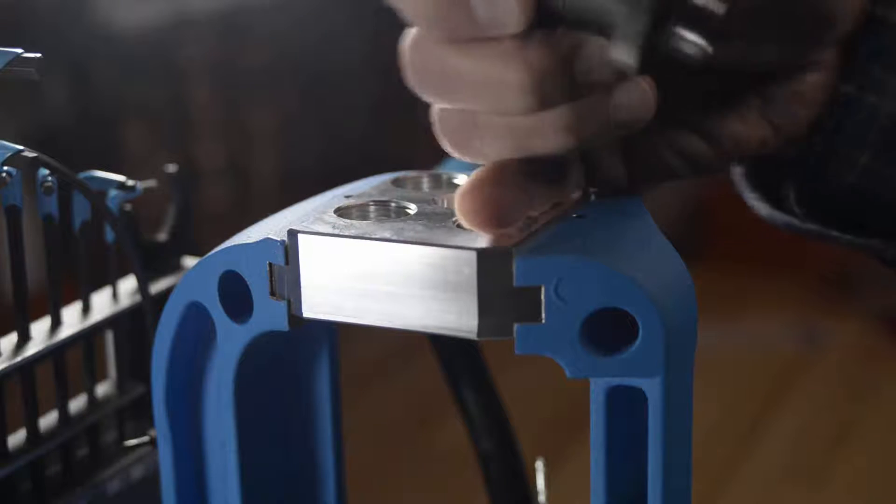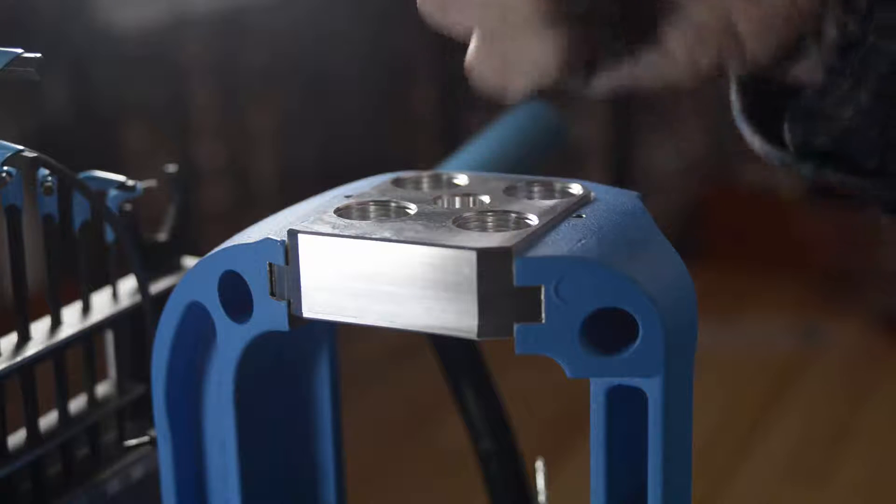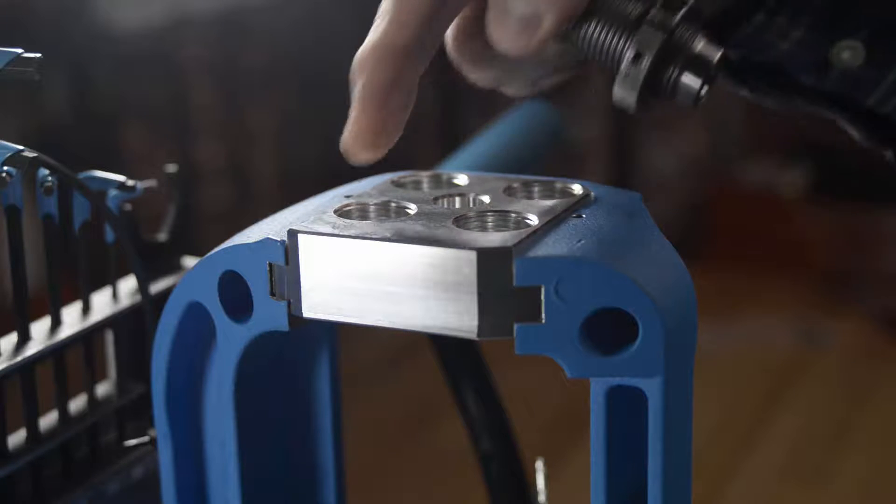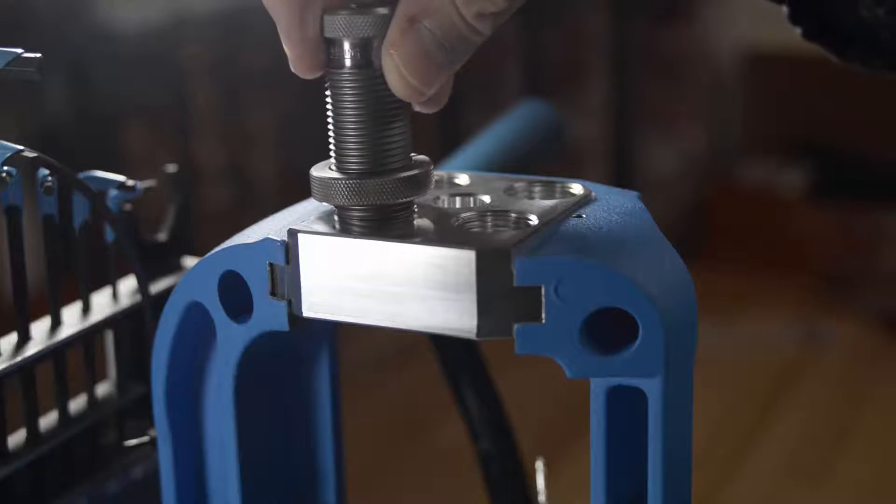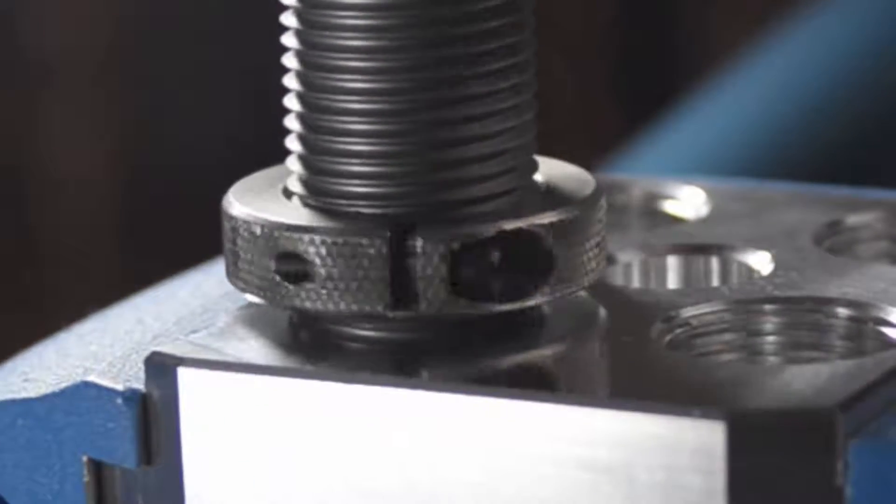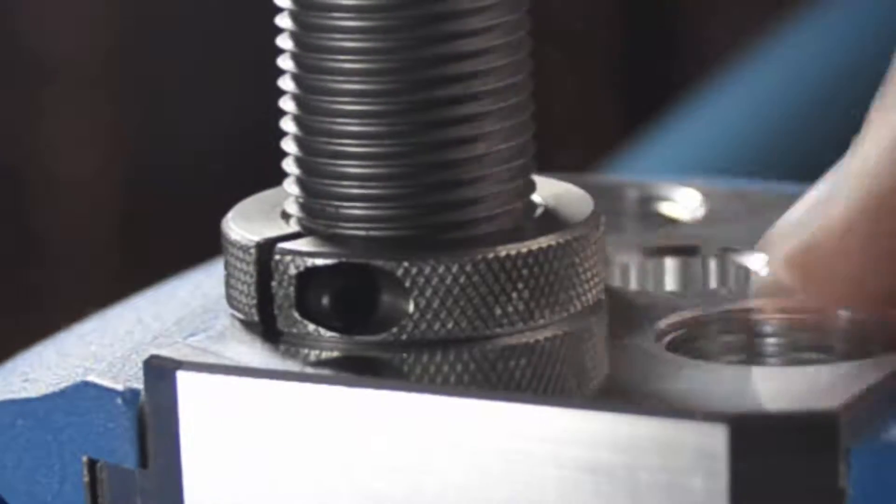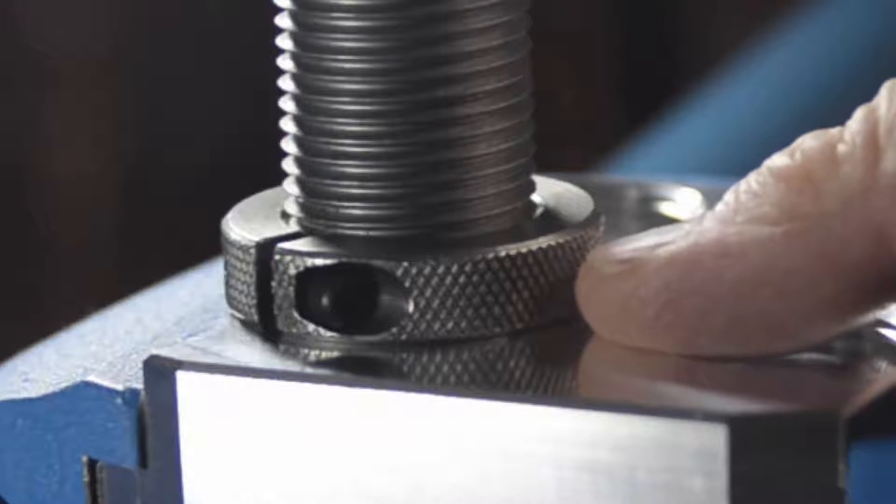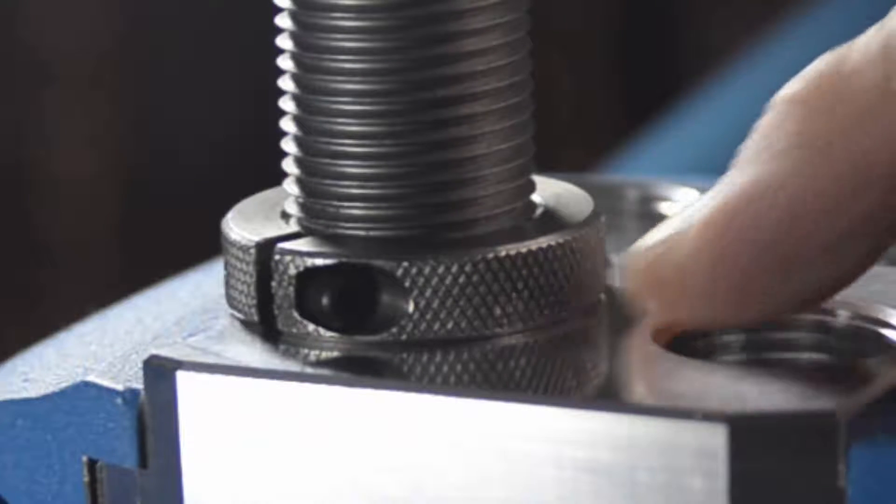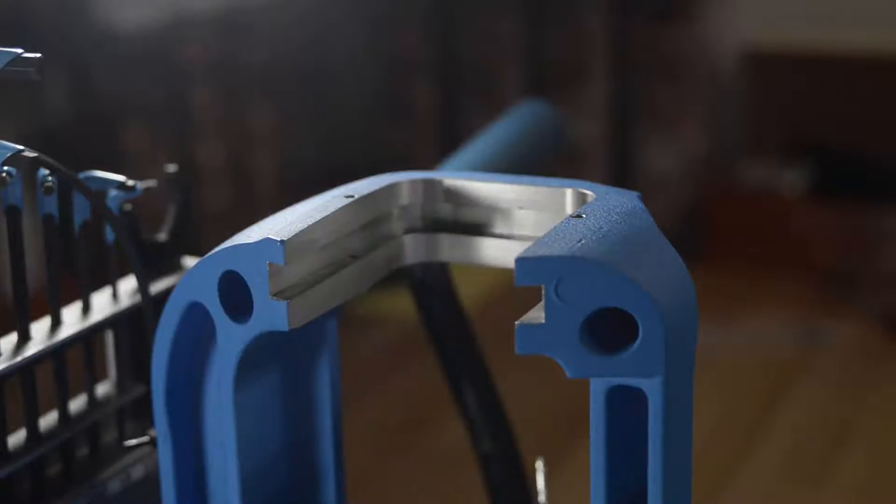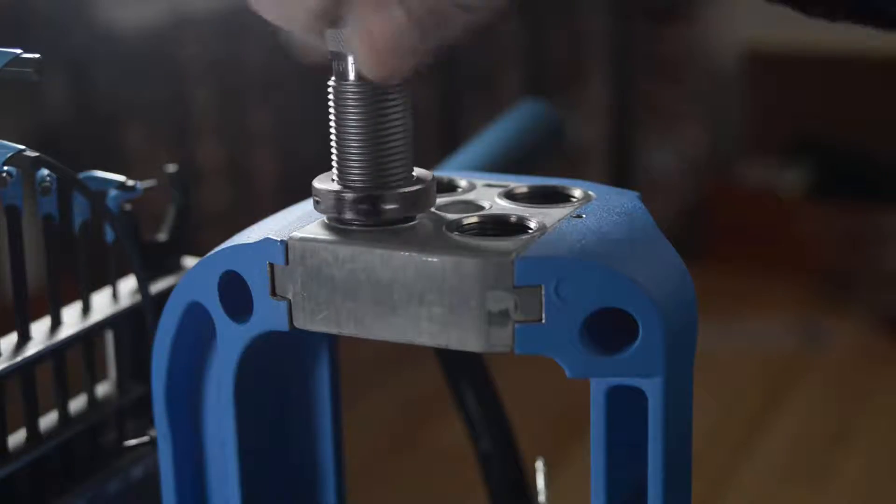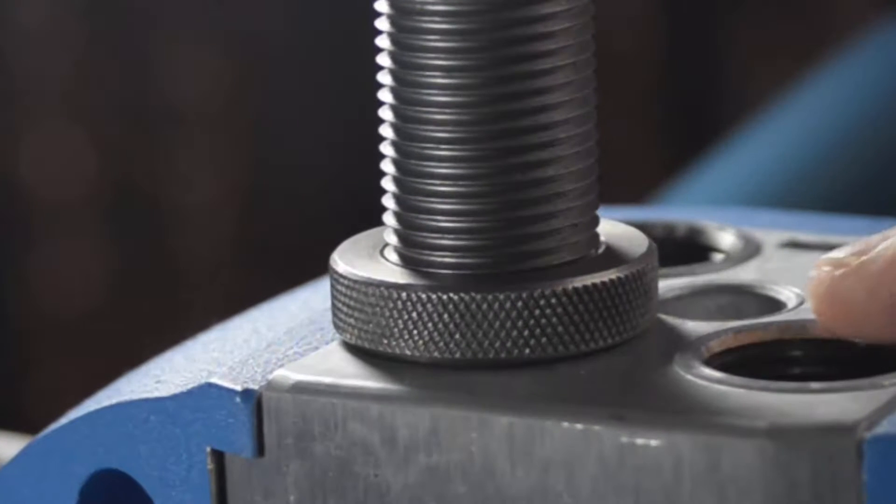One advantage of the rimless tool head that I like is the lock rings will have more contact surface with the tool head. On the CNC, the lock ring contacts the surface of the tool head. And on the Dillon, the lock ring can only contact the rim.